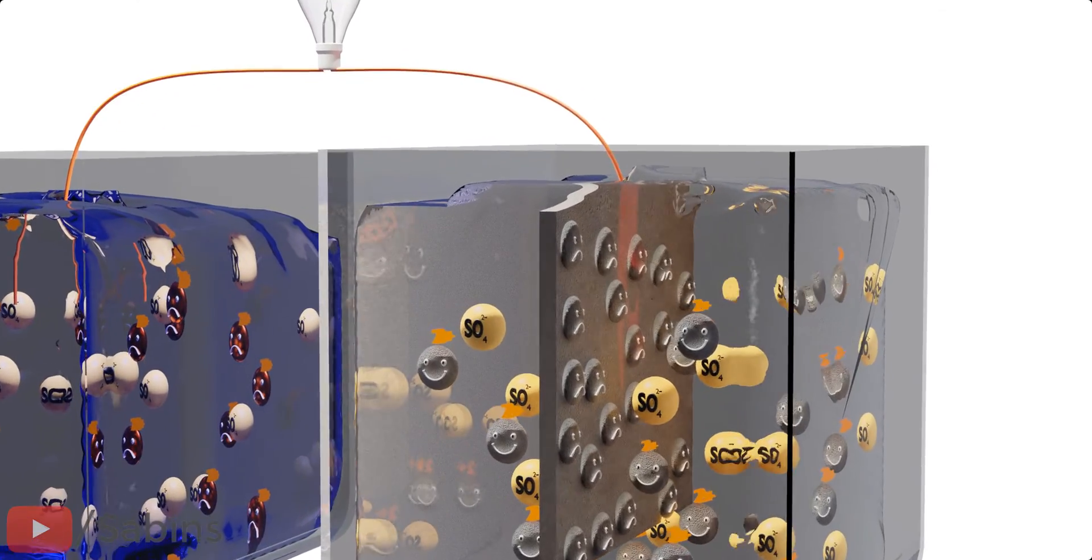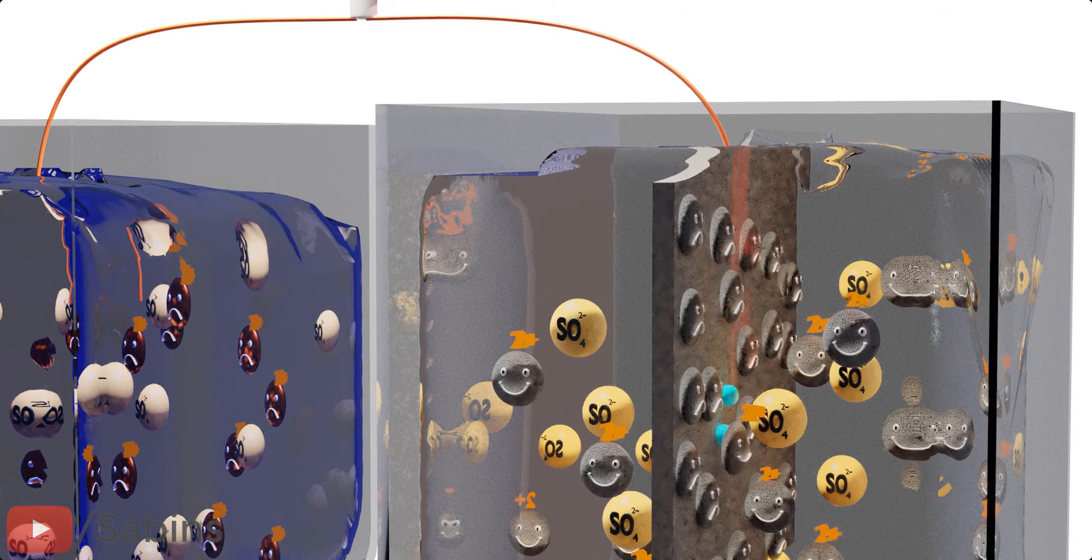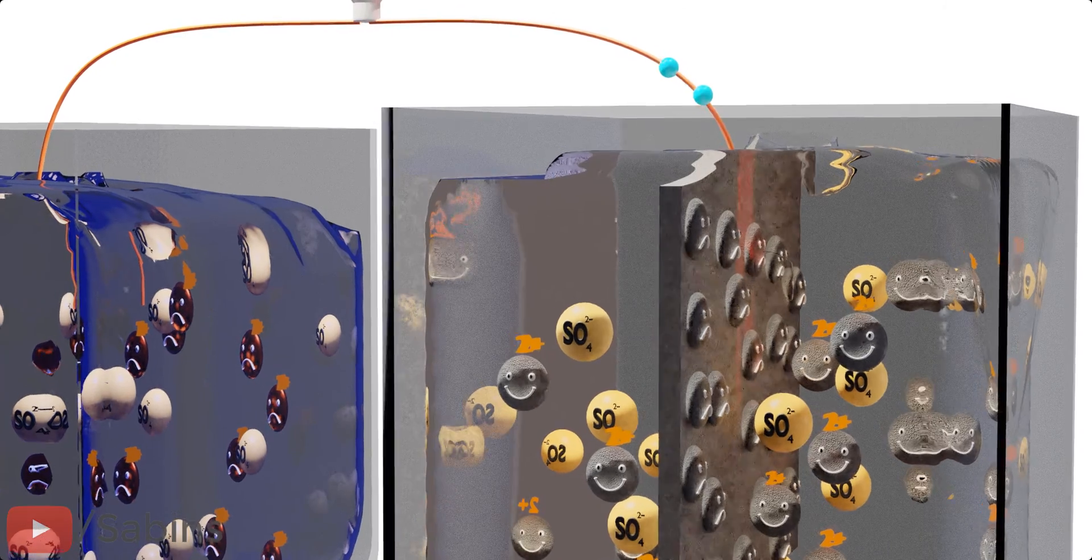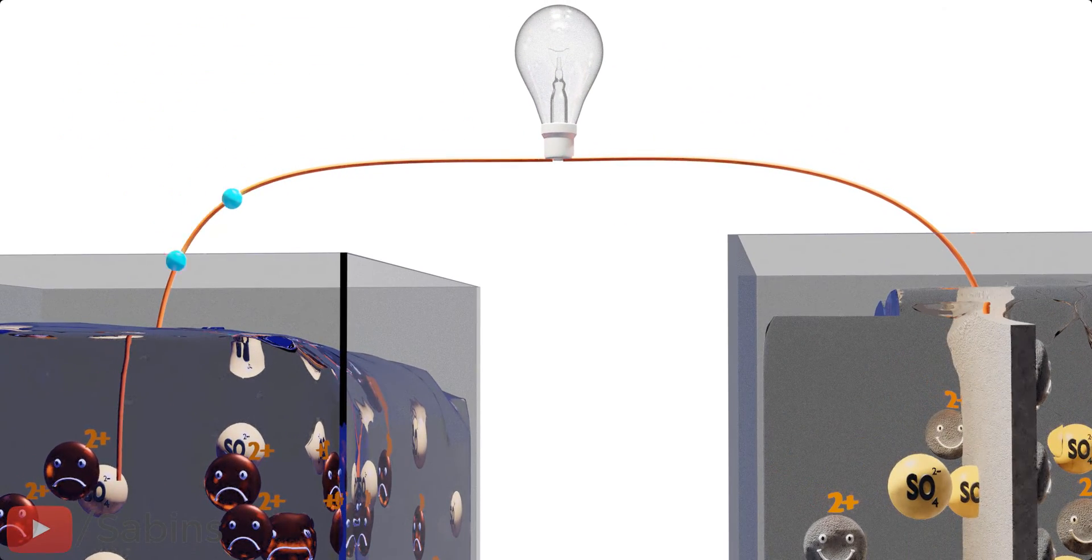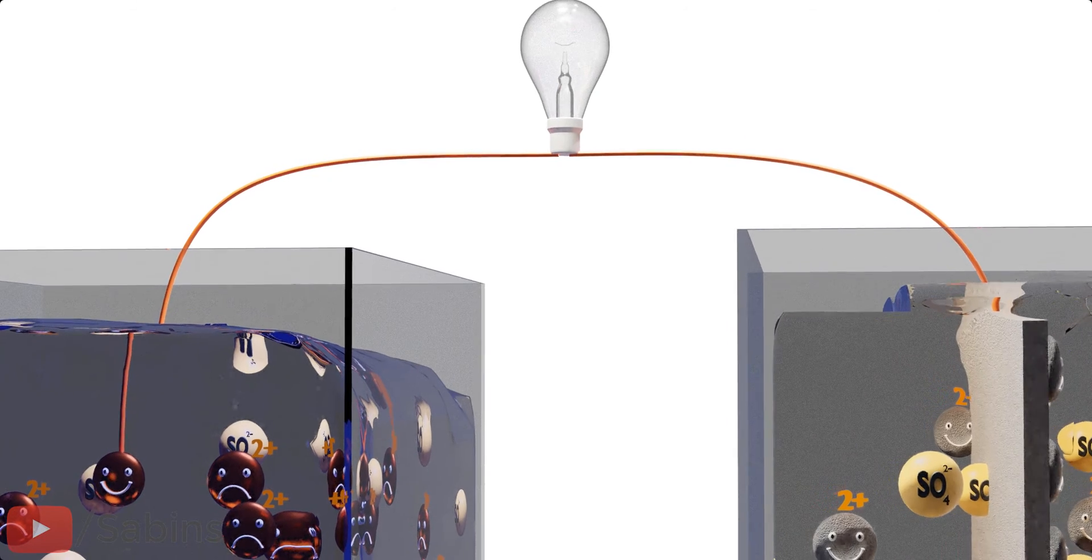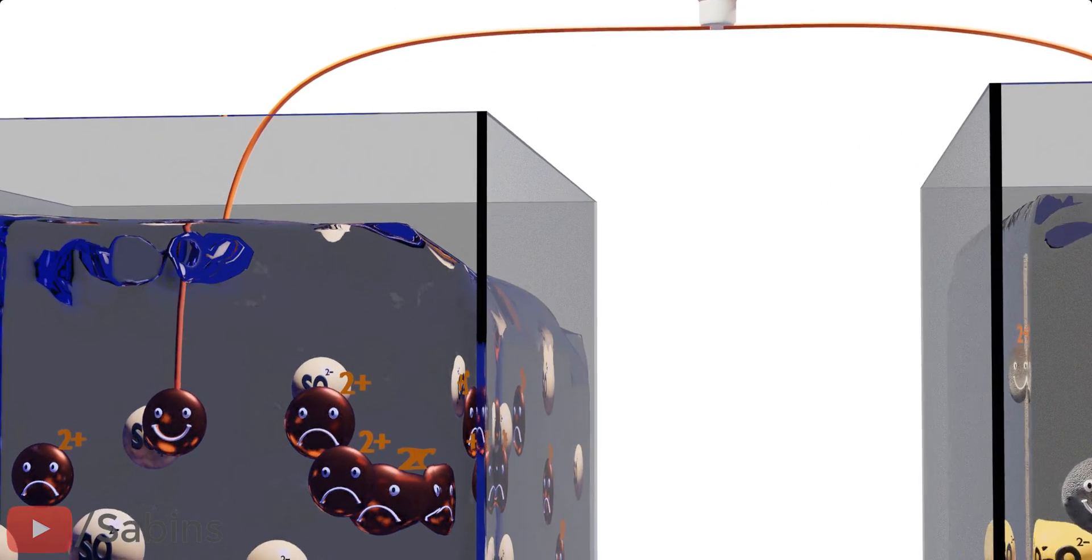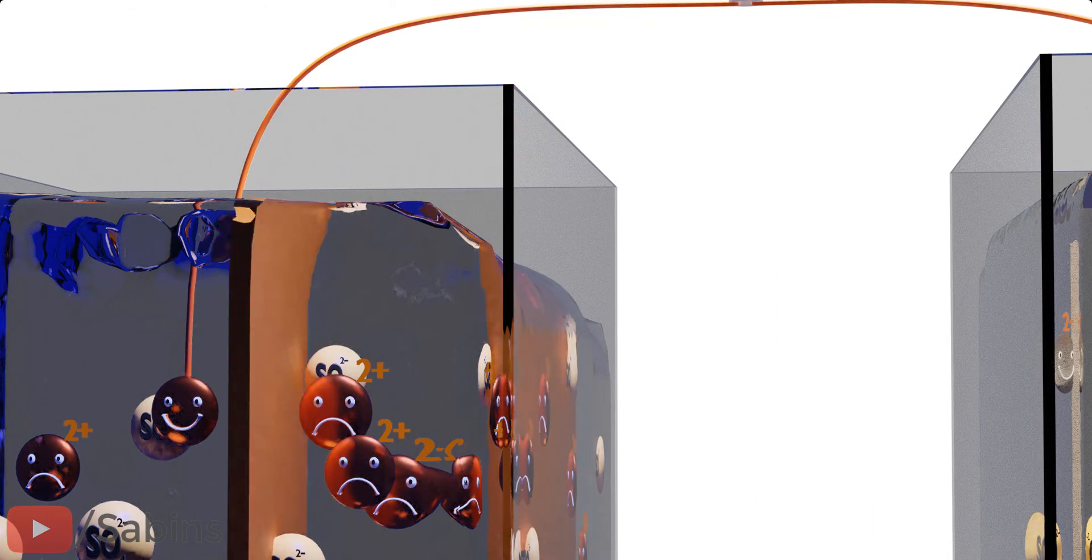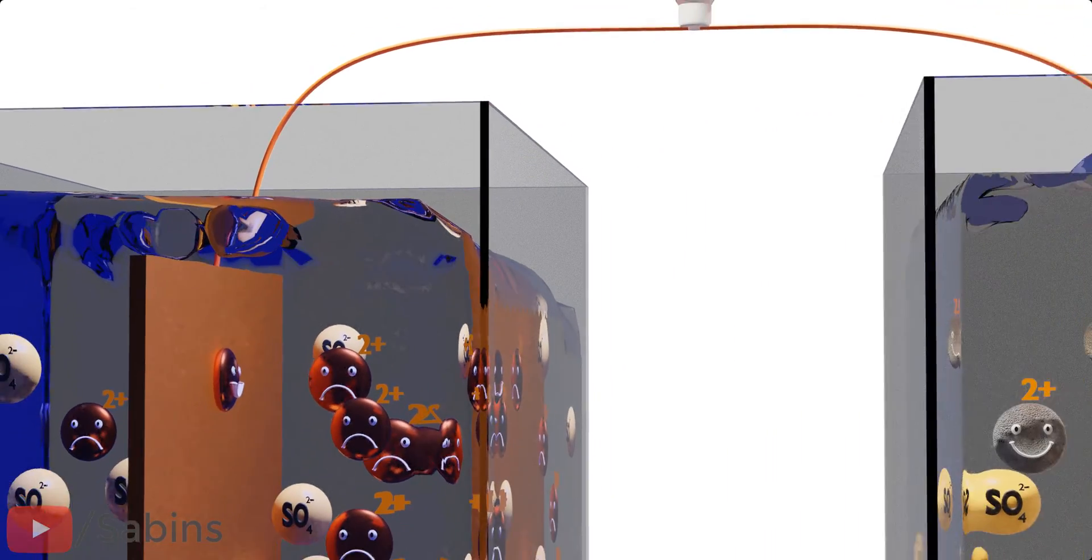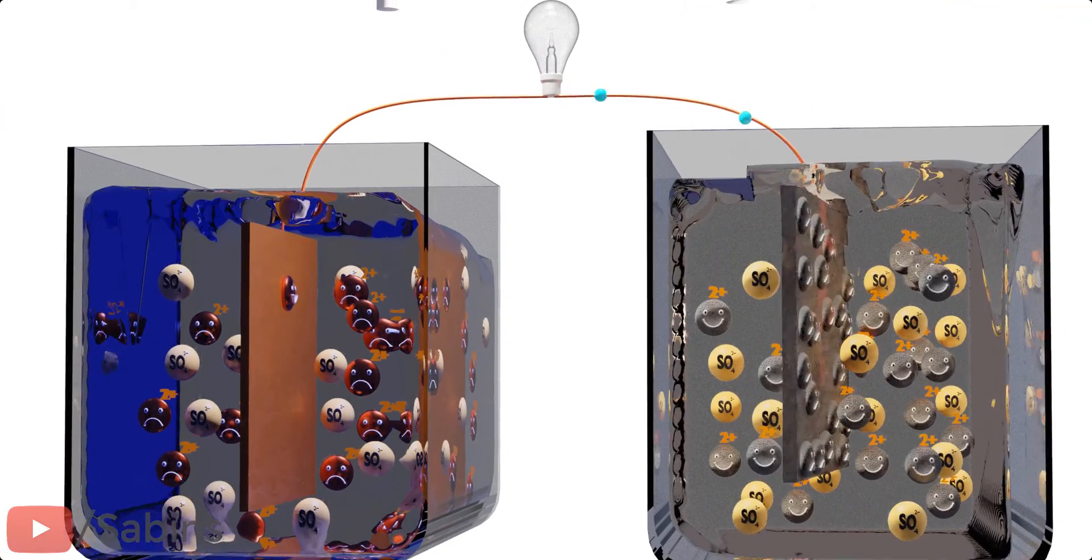Now the electrons flow through the circuit, generating electricity, and the copper ions receive them. The copper ions become atoms now. To accommodate these new atoms, we need a copper metal bar. This arrangement will produce a voltage and electron flow in a sustainable way.